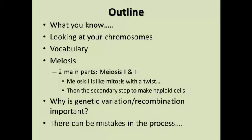After we go through meiosis, which will take the majority of the time, we'll touch a little bit on why genetic variation and recombination is important and how your cells, my cells, everyone's cells are not perfect. There are mistakes. With all of that microscopic copying of hundreds of thousands of little DNA molecules, mistakes happen — not only in those lines, but also along the lines of the meiotic and mitotic process. When the cells divide, things don't always go as planned.